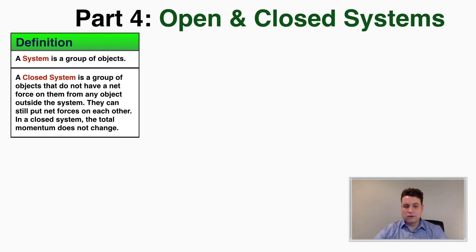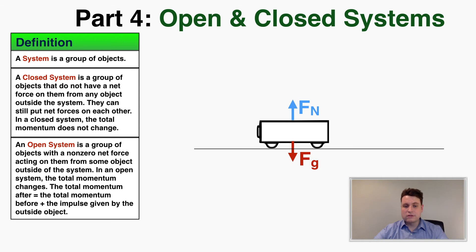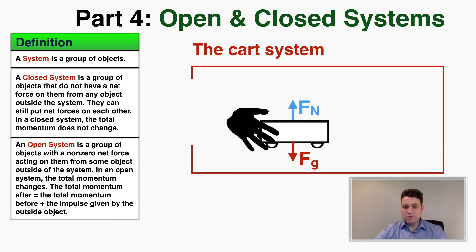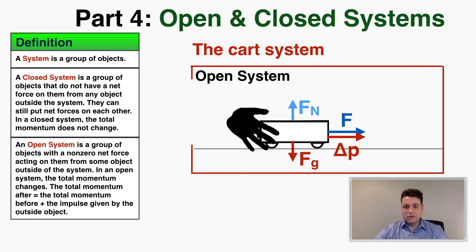An open system is a group of objects with a non-zero net force acting on them from some object outside of the system. In an open system the total momentum changes, and the total momentum after equals the total momentum before plus the impulse given by the outside object. For example, if I just consider a single cart as my system and reach out and give the cart a push, I'm delivering new impulse into the system from something outside of it — so the total momentum after equals the cart's starting momentum plus the additional momentum the hand adds.